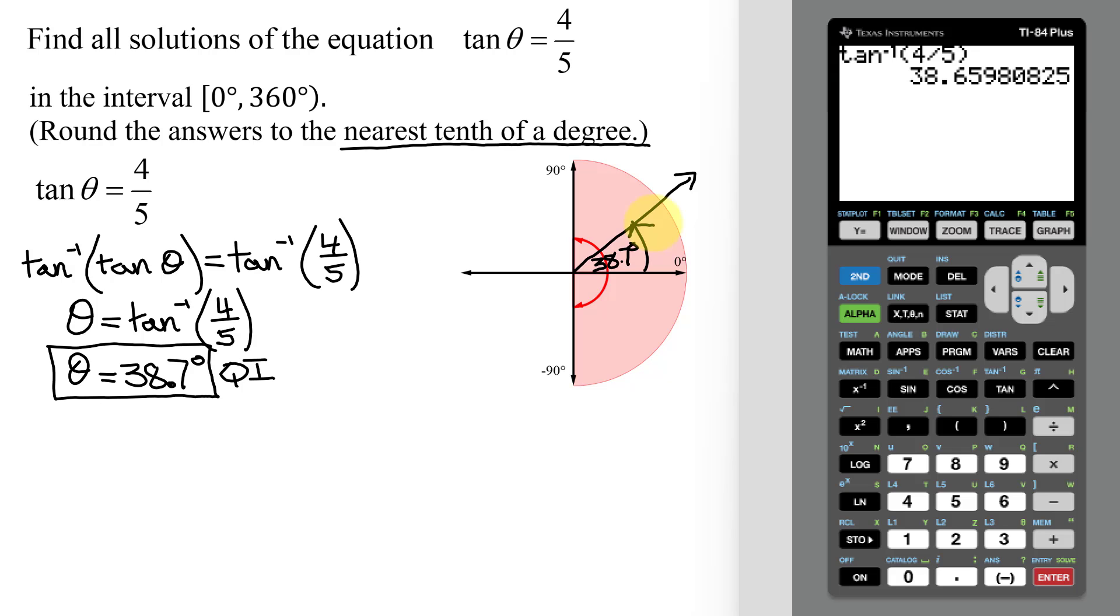But are there any other quadrants in which the tangent of theta could equal positive four-fifths? Well remember, the tangent of theta is y over x. And for the tangent of theta to be positive, we know that x and y are going to have to have the same sign. So that is true in quadrant one when both x and y are positive. But it's also true in quadrant three down here where x and y are both negative.